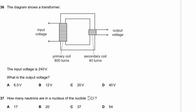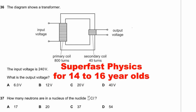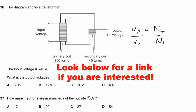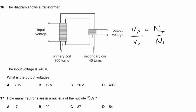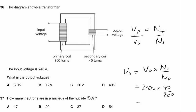Question 36. A transformer has an input voltage of 240V, 800 primary turns, and 40 secondary turns. Using Vp/Vs = Np/Ns, rearranged: Vs = Vp × Ns/Np = 240 × 40/800 = 12 volts. The answer is B.